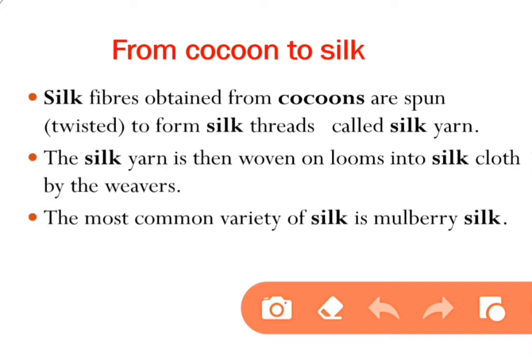Silk is a natural protein fiber, some forms of which can be woven into textiles. The protein fibers of silk are composed mainly of fibroin and are produced by certain insect larvae to form cocoons. For obtaining silk, moths are reared and their cocoons are collected to get silk threads.